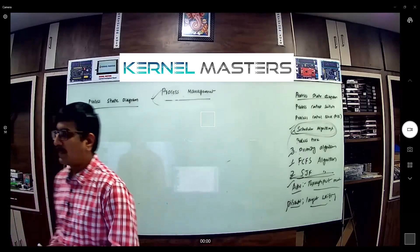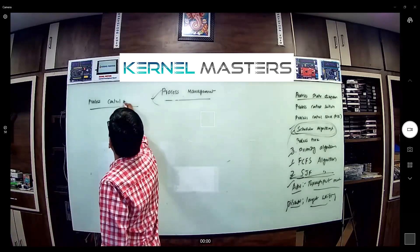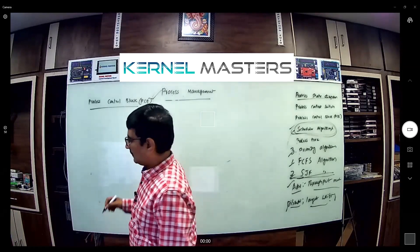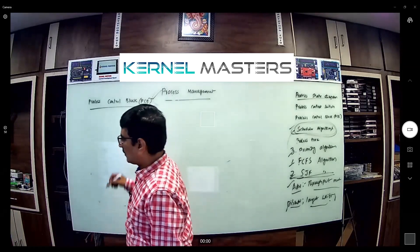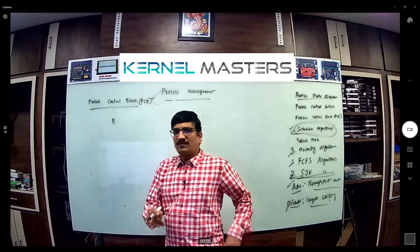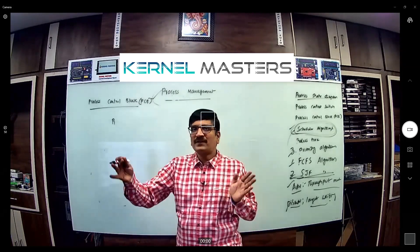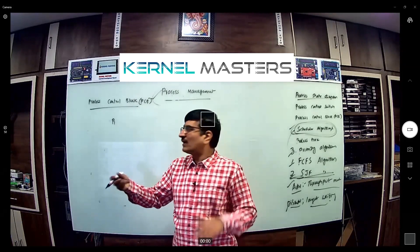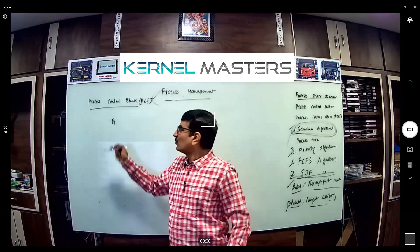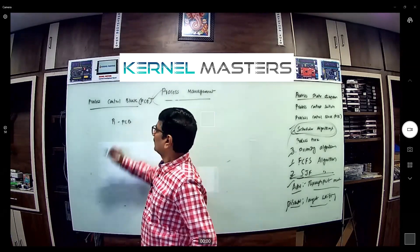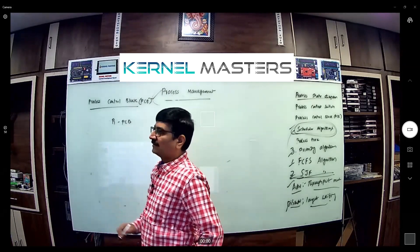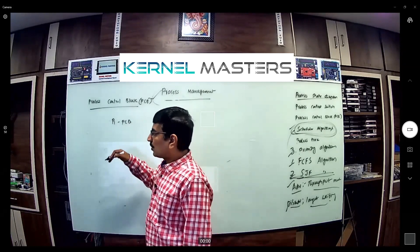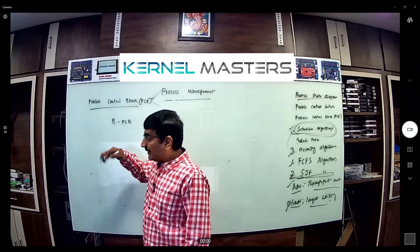Process Control Block, shortcut PCB. Every running process has a PCB. How many PCBs? Every process has a unique PCB — P1 has PCB, P2 has PCB, and so on. Every process container holds process information, process metadata.